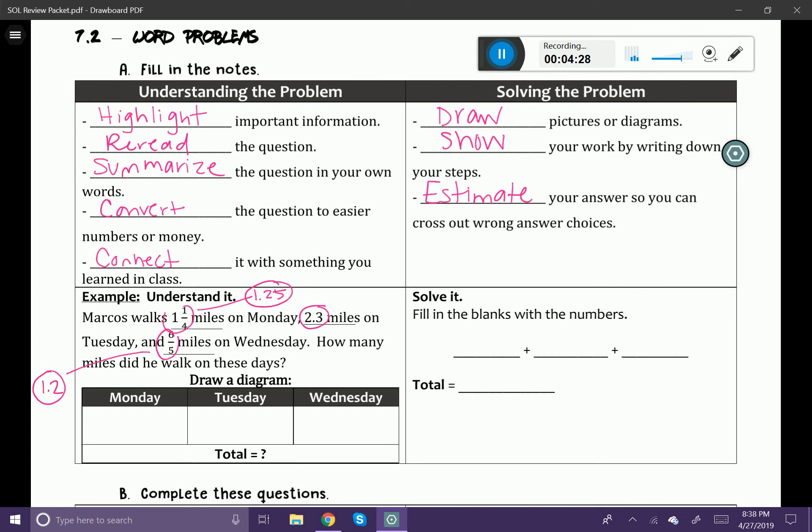Okay. Now let's look at this. Could we draw a diagram maybe? Could we draw a diagram like you see down here? Sure. Well, on Monday, he walked 1.25 miles. On Tuesday, he walked 2.3 miles. And then on Wednesday, he walked 1.2 miles. So that's kind of a diagram. And I want to know what's the total miles.